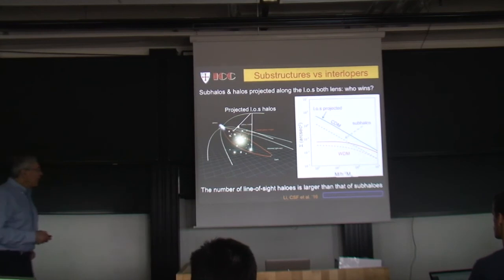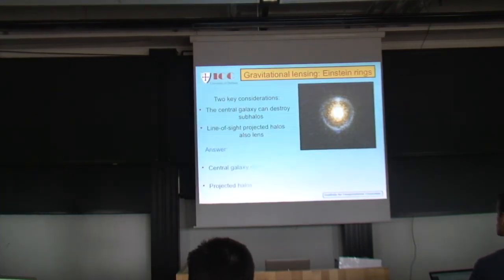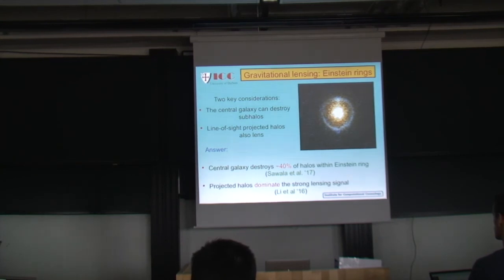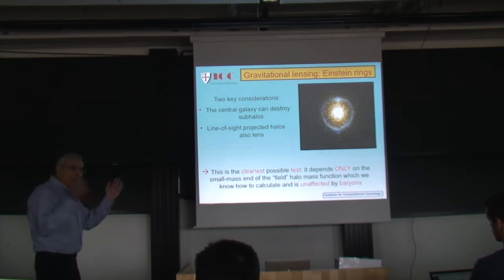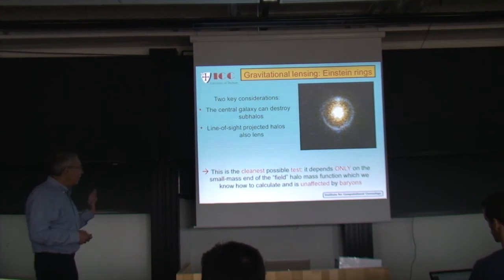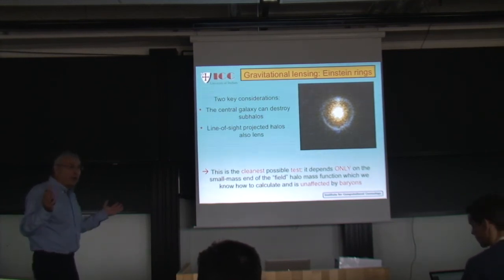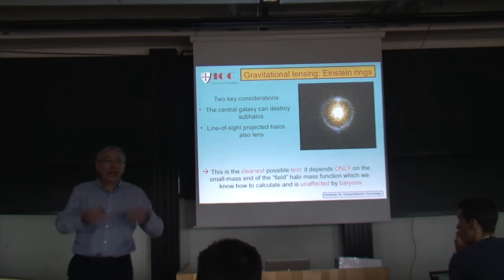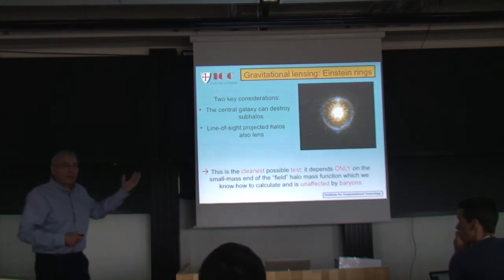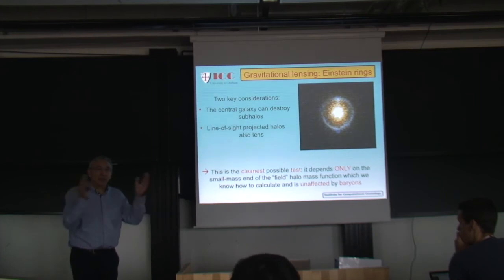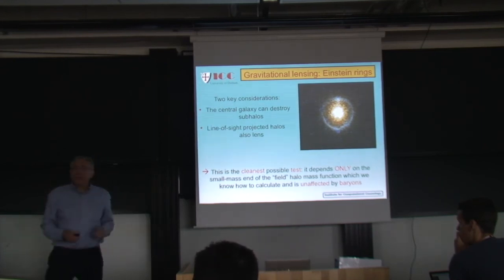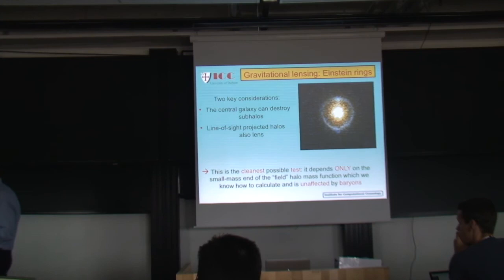This is an extremely elegant test because it depends only on the small-mass end of the field halo mass function, which we know how to calculate — any of you can download GADGET, run it, and get the theoretical expectation. And the objects involved have never seen a baryon in their life. At 10^7 solar masses, these halos have never been near a baryon, so there are no baryonic effects to worry about.